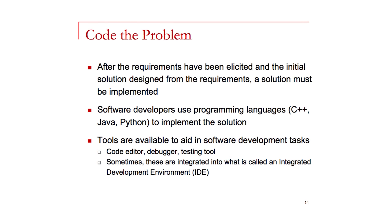After we have the requirements and plan in place, we can begin to code up the solution. Solutions are coded in programming languages such as C++, Java, or Python. In this course, we'll talk about Snap as an example — a language that a human can understand very well. There are also various tools available to software developers: code editors for writing the program, debuggers to find logic errors, and tools to help test programs. When these are integrated together, we call that an integrated development environment, or IDE.